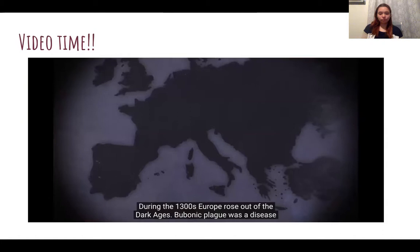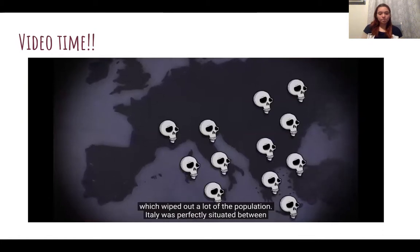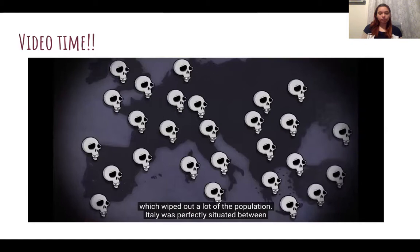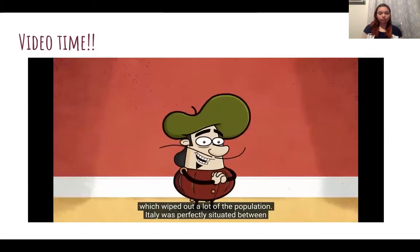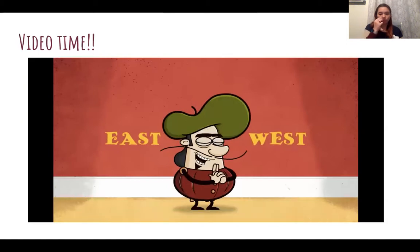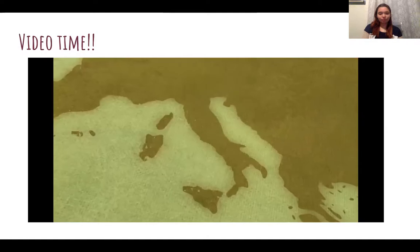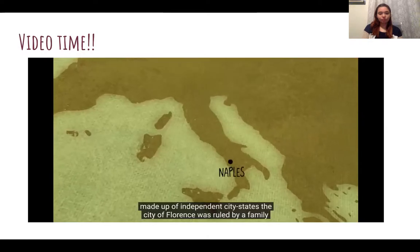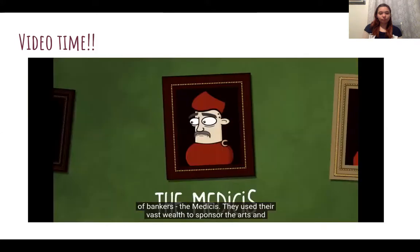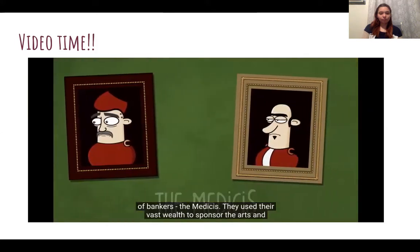During the 1300s, Europe rose out of the Dark Ages. The Bubonic plague was a disease which wiped out a lot of the population. Italy was perfectly situated between East and West for overseas trade. The cash came rolling in. The country was made up of independent city-states. The city of Florence was ruled by a family of bankers, the Medicis, who used their vast wealth to sponsor the arts and sciences.